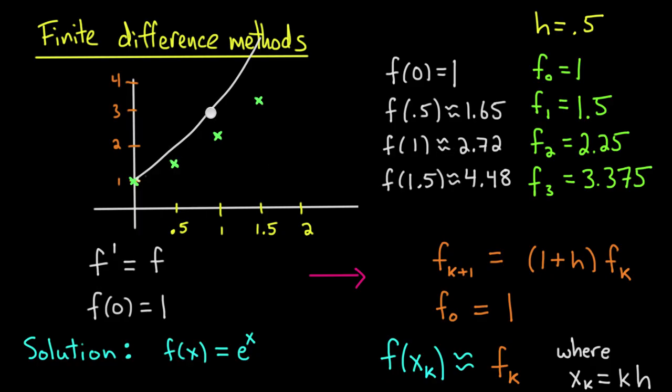At 1 it's 2.72, which is a little bit more over my approximation of 2.25, and it continues to wander away from the approximation. So you see how I'm approximating the actual solution.